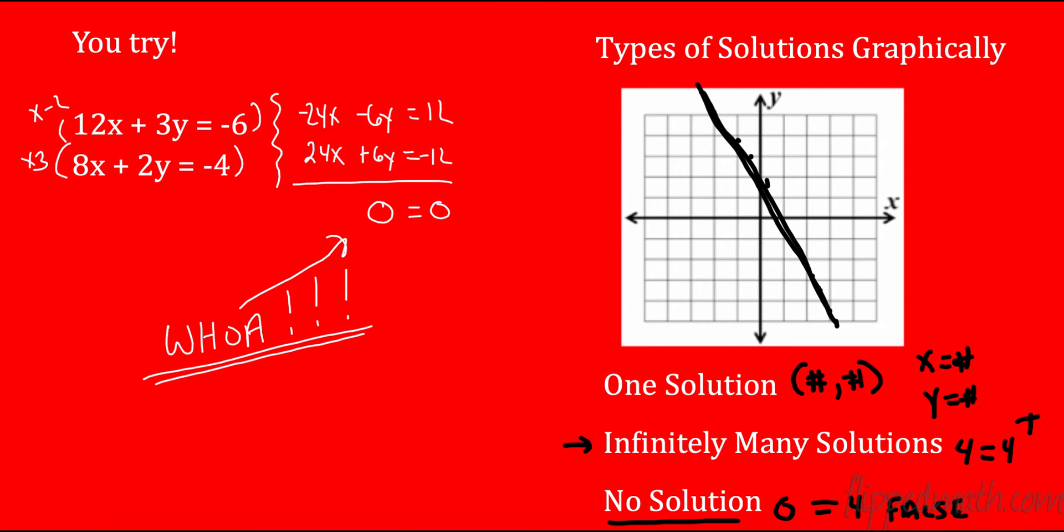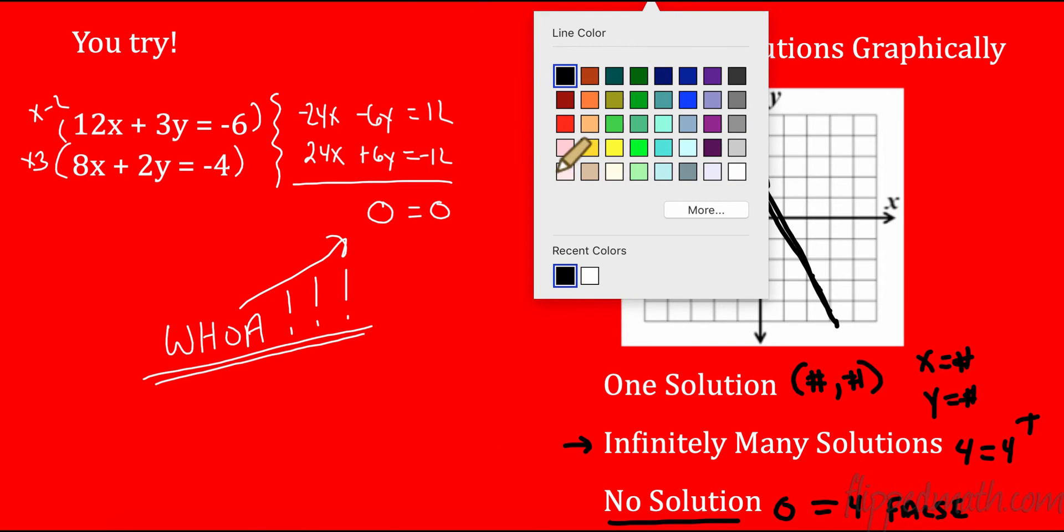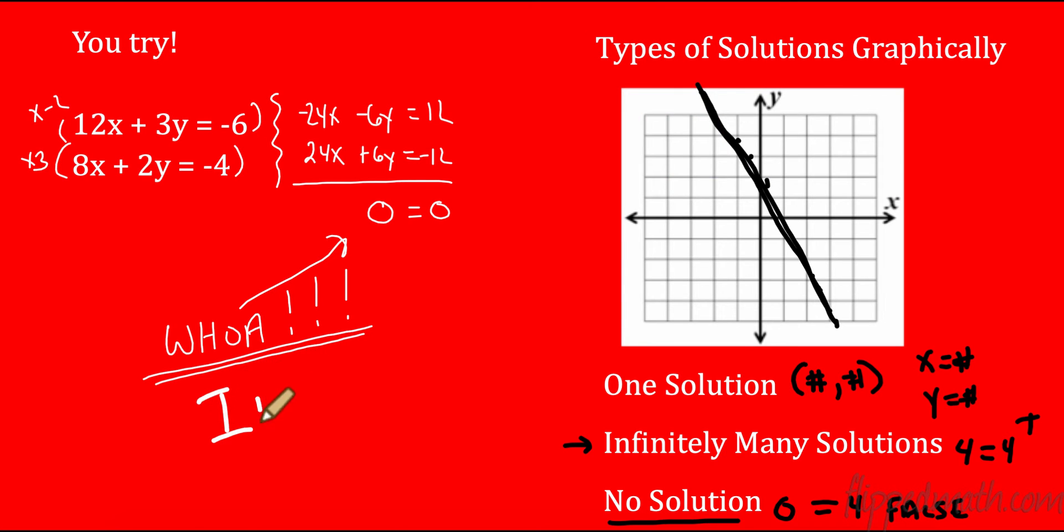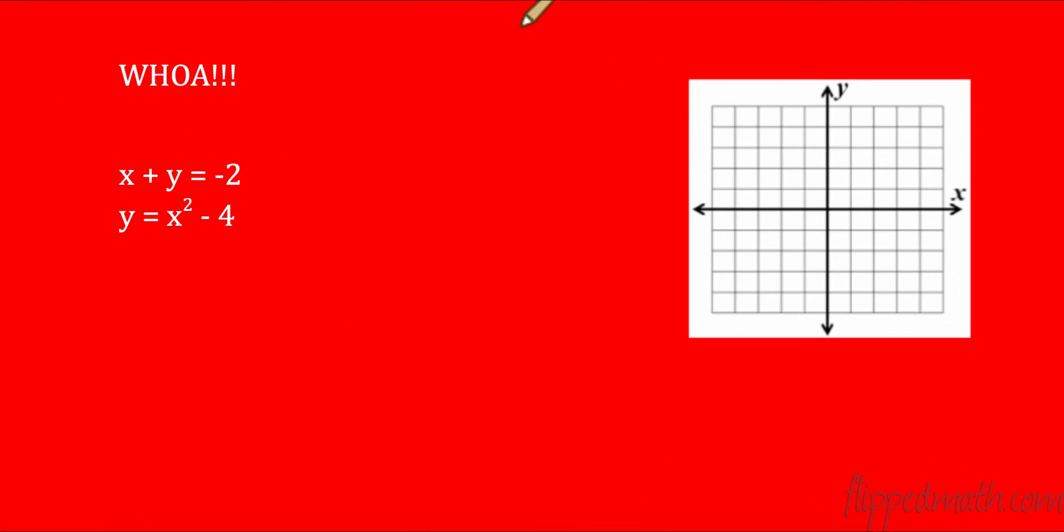So over here, we now know that we have infinitely many solutions because 0 does equal 0. That is a true statement. All right. So you need to keep an eye out on these. You could have one solution when you have two lines. All right. You could have infinitely many or you could have no solutions. Okay.